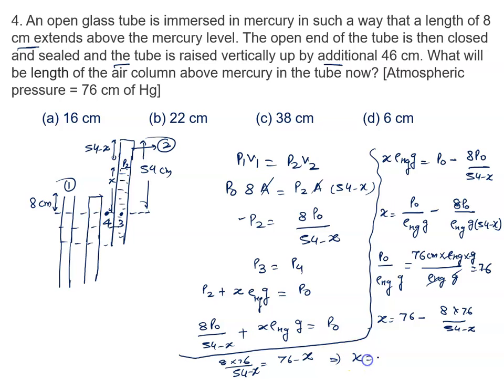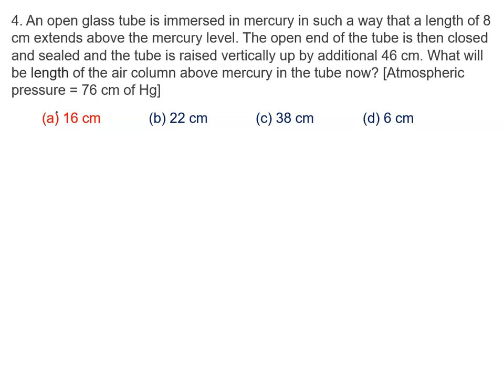After solving, we will get x is given by 38 centimeter. So x we are getting as 38 centimeter. x is the mercury column height. But we have to calculate air column. So what is the value of the air column? Air column is written as 54 minus 38. We will solve, it is 16 centimeter. So the right answer to this problem is option A, that is 16 centimeter.